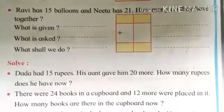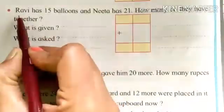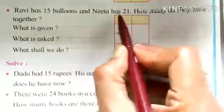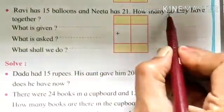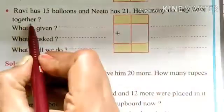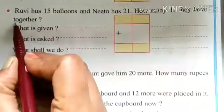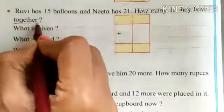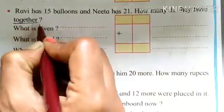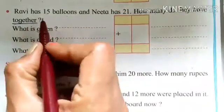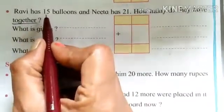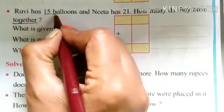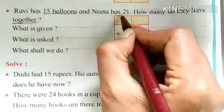Let us take one more example. Ravi has 15 balloons and Nita has 21. How many do they have together? Now from this question we get one word of addition, that is together. Together means we have to make addition here. Then we have to find out what numbers and what information is given. That is Ravi's 15 balloons and Nita's 21.